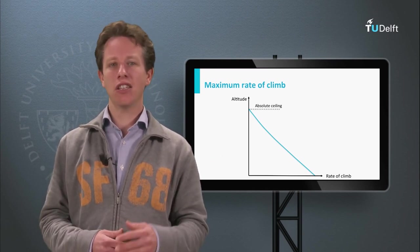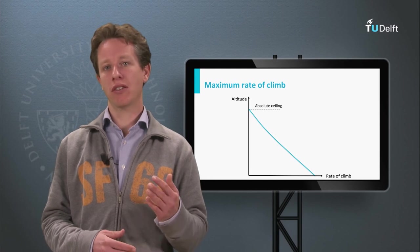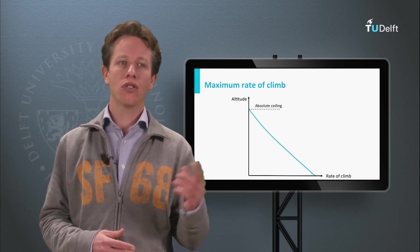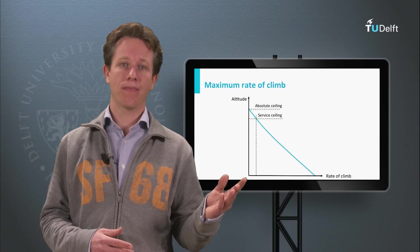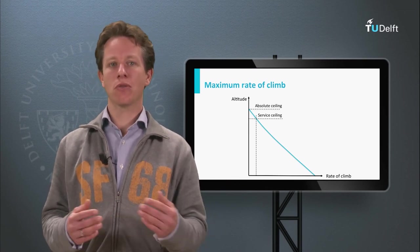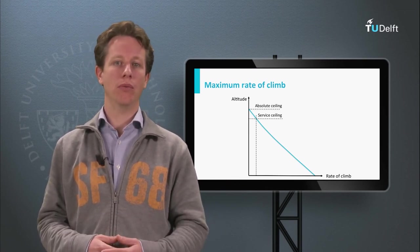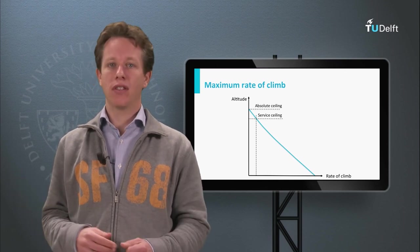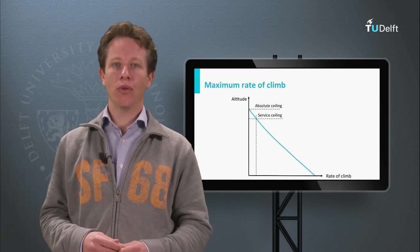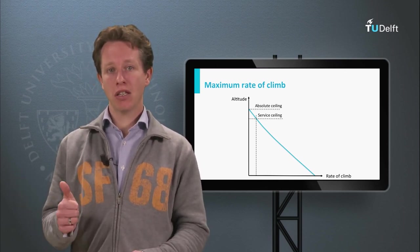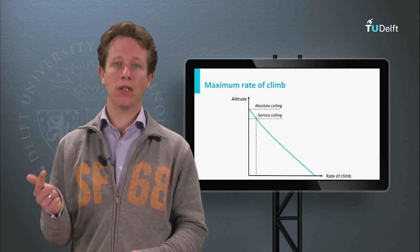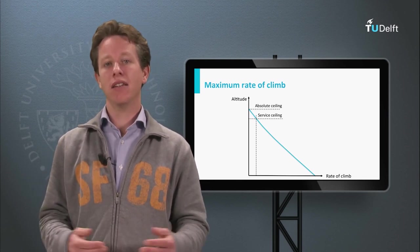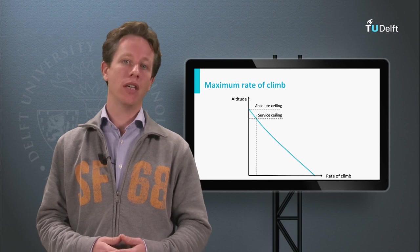So in practice it is not possible to fly at the absolute ceiling for a prolonged period of time. On the other hand, it is perfectly well possible to fly slightly lower at what we call the service ceiling. In that condition there is a small amount of excess power available. So now we have determined all three performance limits — the maximum airspeed, the minimum airspeed, and the maximum altitude. Let's combine these in one big figure.